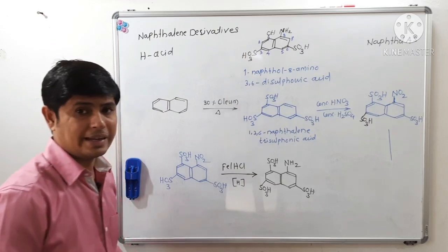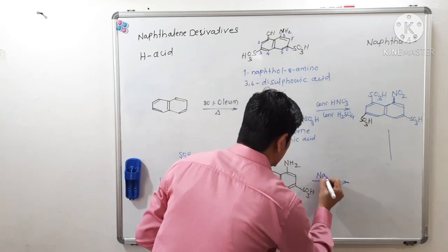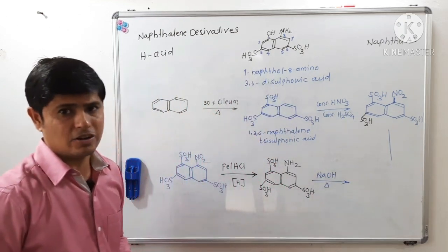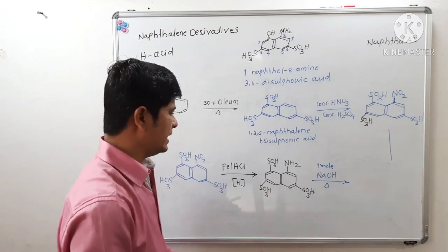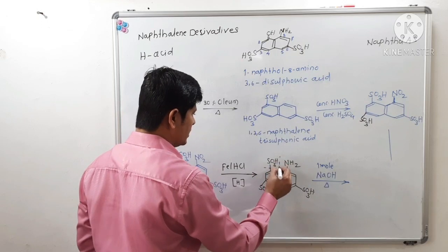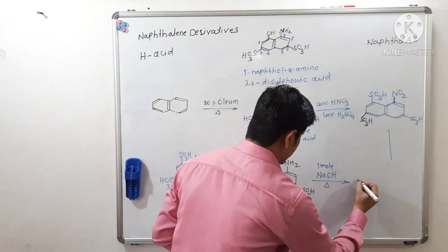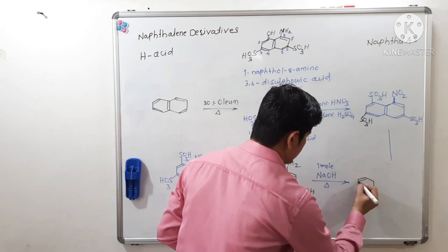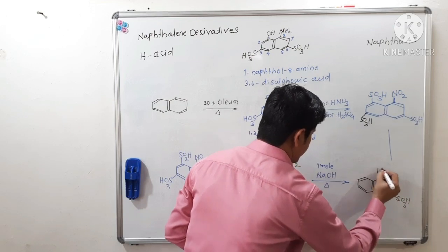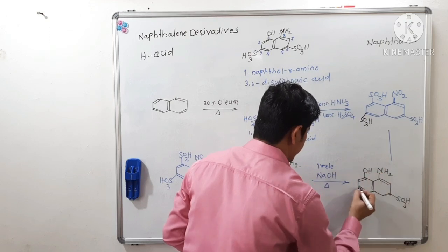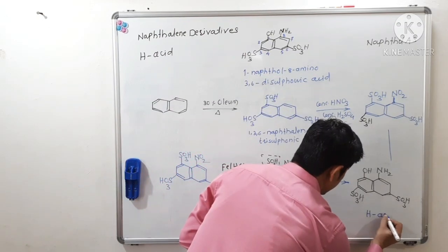And in the last step, this intermediate is on reaction with sodium hydroxide. One mole of sodium hydroxide on heating gives replacement of this sulfonic acid group by hydroxyl functionality. So, what we will get? We will get H-acid.